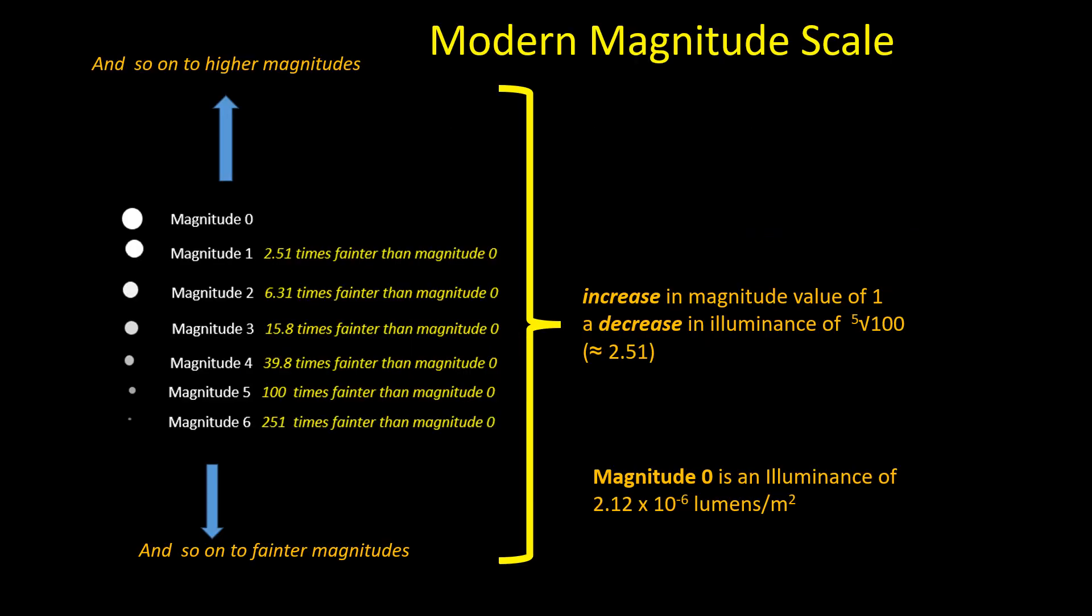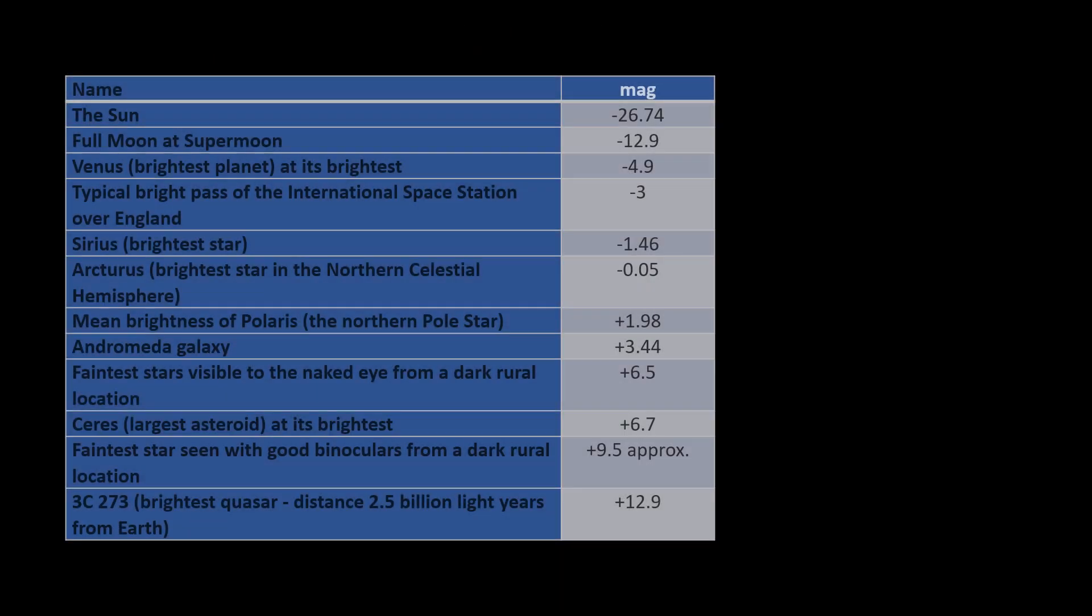And here's a summary of the modern magnitude scale. As well as stars, it also applies to planets, asteroids, comets and even artificial satellites. And here's the magnitudes of some objects on the modern scale.